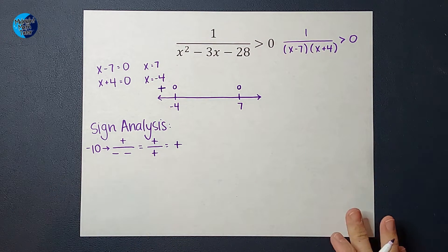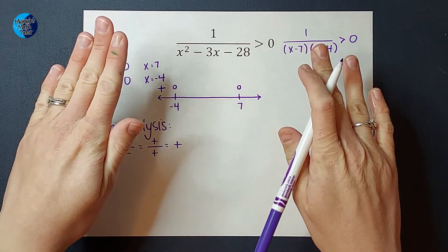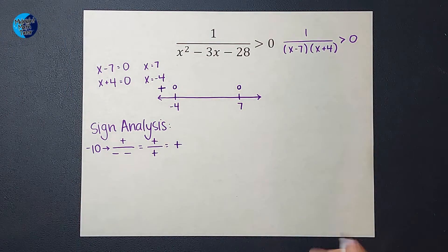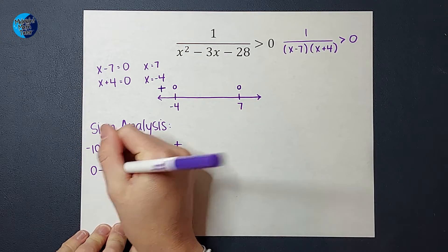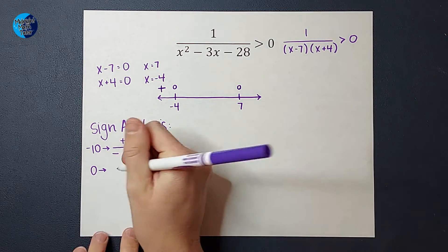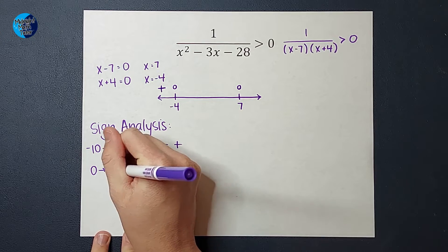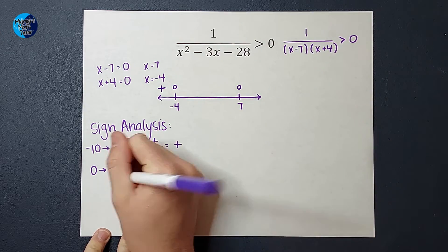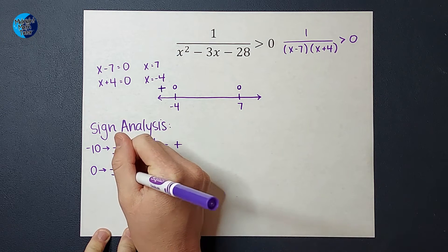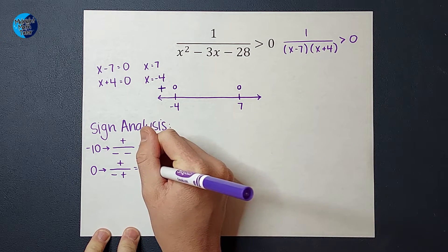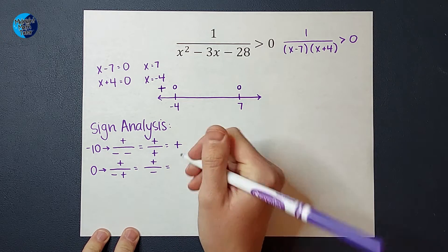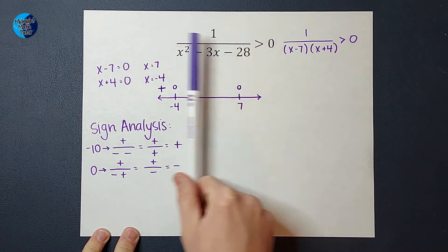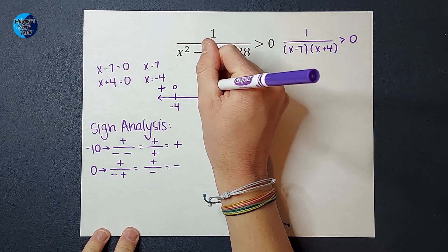Now we're going to pick a number between negative four and seven. Zero is in there, so I'm going to pick zero. On top, again, it's just a one, which is positive. On the bottom, I've got zero minus seven, which is negative, and zero plus four, which is positive. So on top I've got a positive, on the bottom I've got a negative times a positive, which is negative. A positive divided by a negative is negative. So for this region, I got a negative output.